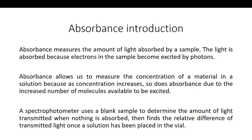For the second section we want to talk about absorbance. Absorbance is essentially a measurement of how much light a substance will absorb when exposed to various wavelengths of light. In this case we're trying to find the absorbance of our yellow 5 dye in the solution. To do this we're going to use a spectrophotometer, which allows us to put a solution into the instrument and tells us how much light is absorbed.